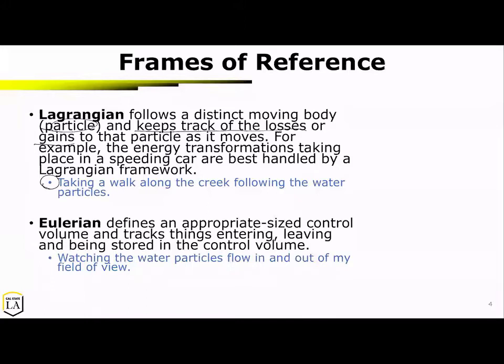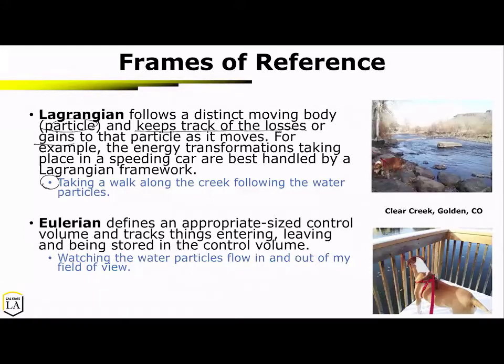Eulerian defines an appropriate size control volume and tracks things entering and leaving the system, and what's being stored in the control volume. This is like watching the particles flow in and out of my field of view. So this is me walking the dog along the river — that's Lagrangian — or taking a nice little break and watching the river go past me and watching the particles move left to right out of my frame of view.